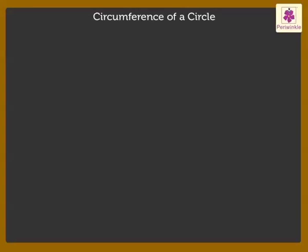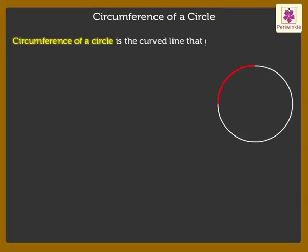Before we begin, let us understand the meaning of circumference of a circle. Circumference of a circle is the curved line that goes around the edge of a circle.